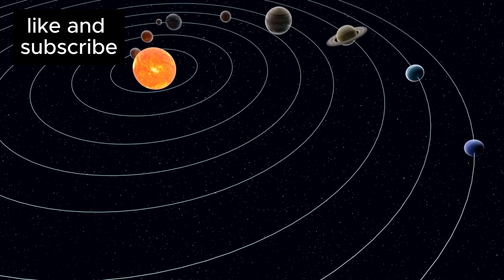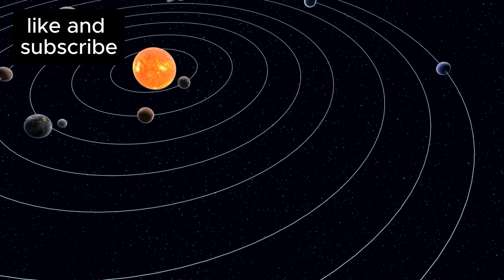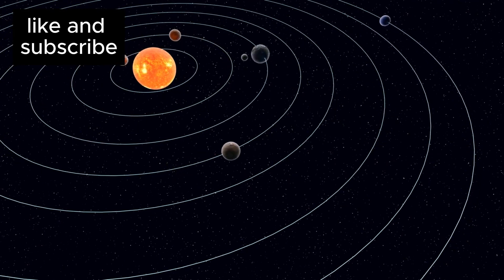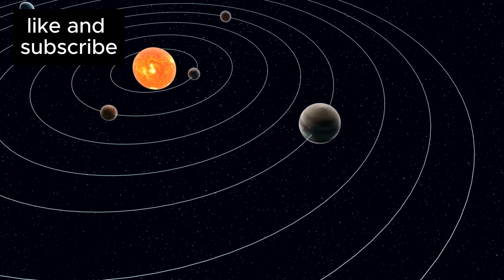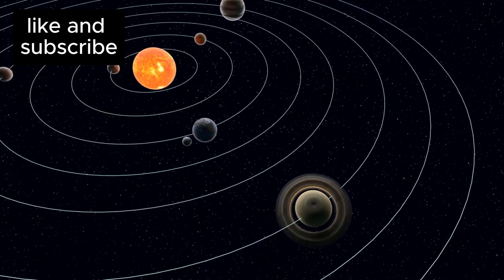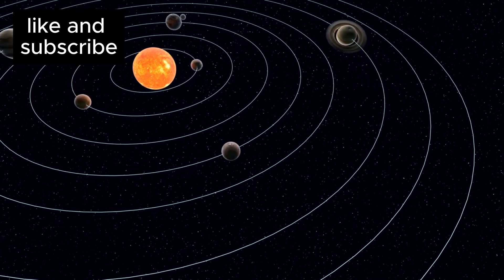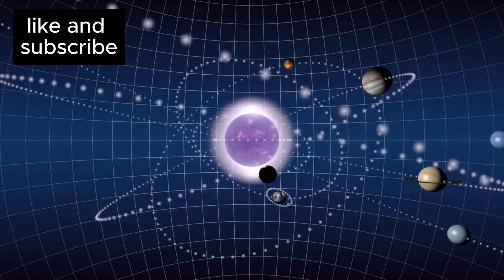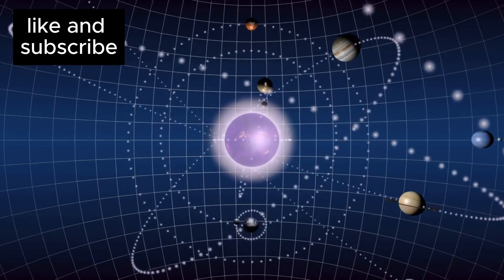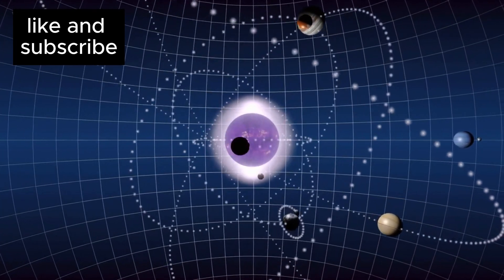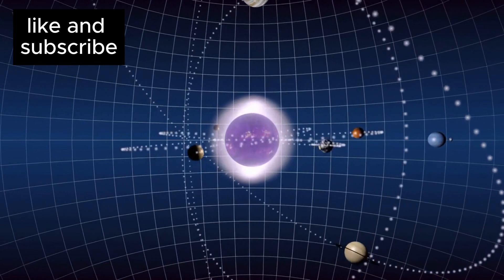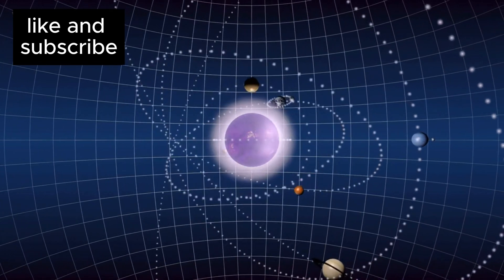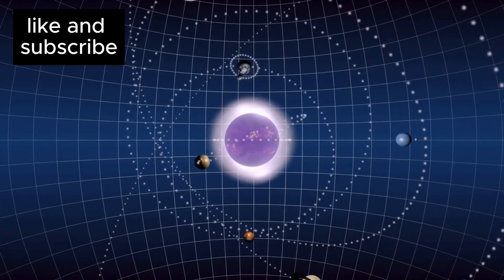Moreover, studying the orbit patterns and gravitational interactions of these objects could deepen our understanding of the complex dynamics that have influenced the formation and behavior of objects in our solar system. Going beyond our own solar system, this research could also offer insights into the formation and evolution of other planetary systems, allowing scientists to make comparisons between our solar system and those in distant star systems.